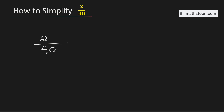In this video, we will simplify the fraction 2 over 40 in its simplest form. See that both the numbers 2 and 40 are even numbers, so they will be divisible by 2. Therefore, to simplify this fraction, we will divide both the numerator and the denominator by 2.